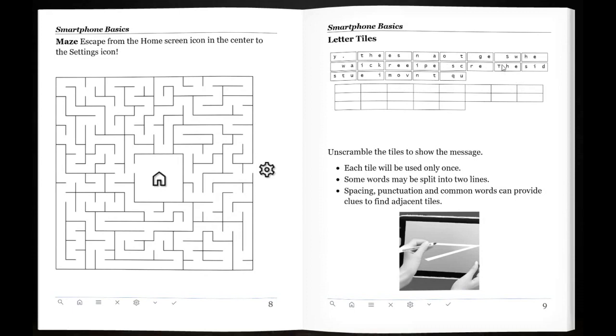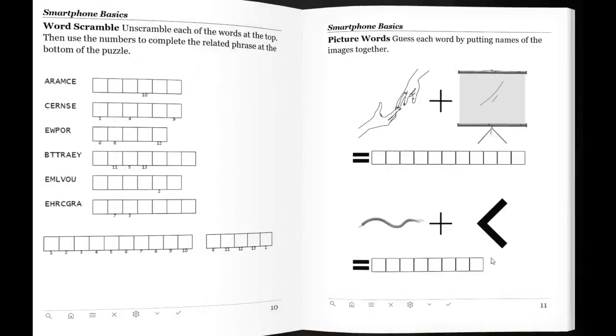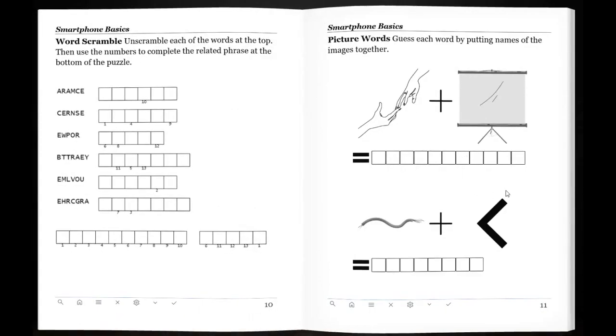Here's a little hint for you. Start with the, because it's got the capital T, and put that one right here. Let's keep going. Picture words. These are the old rebuses. These are popular.